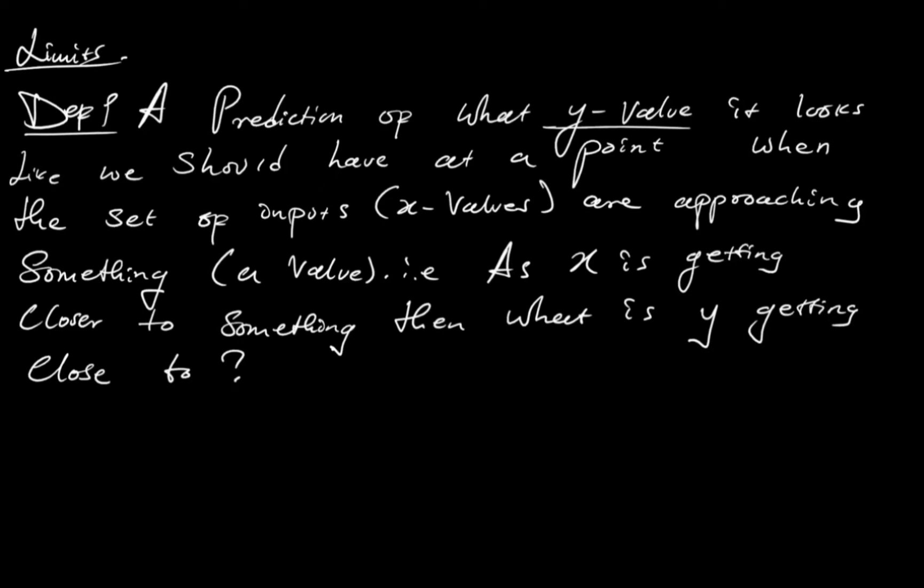What are limits? So I have a basic definition for you. Limits are just simply predictions of what value it looks like we should have at a particular point when the set of inputs, which are the X values, are approaching something which is a random value. So trying to look at what Y value will get when X is approaching something. So as X is getting closer and closer to something, which is that value, then what is Y getting close to?